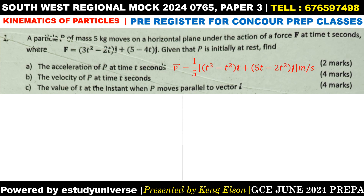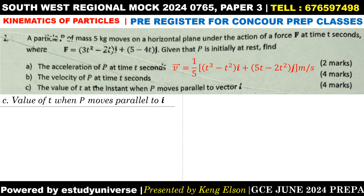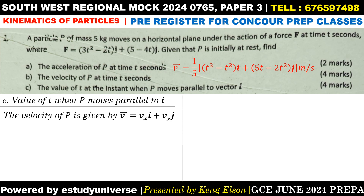Now let us find the value of t at the instant when the particle is moving parallel to the vector i. Generally the velocity of the particle is vx·i + vy·j, where vx is the component in the i direction and vy is the component in the j direction. Moving parallel to the vector i means moving in the direction of i, so there is no vertical component of velocity — vy equals zero.